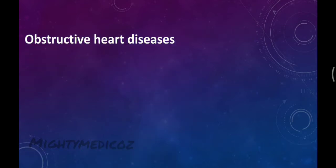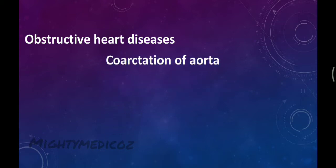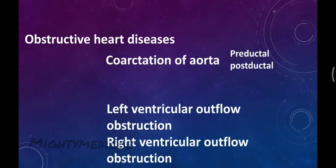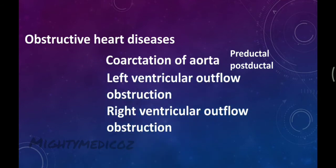Another category is obstructive congenital heart disease, which includes coarctation of the aorta, left ventricular outflow obstructions, and right ventricular outflow obstructions. These represent the types and subtypes of obstructive lesions.